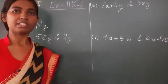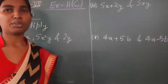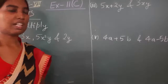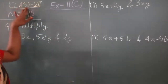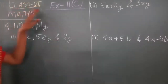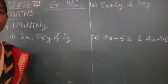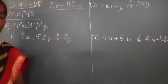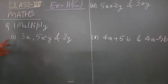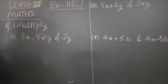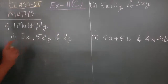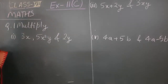Hello students, in this video we will see Class 7th Maths Exercise 11c, question number 1. The question says to multiply the given terms. Multiplication is very simple: numbers will multiply with numbers, and variables will multiply with variables.